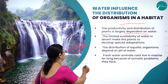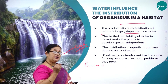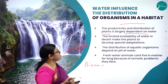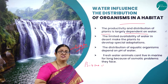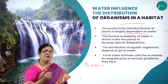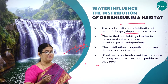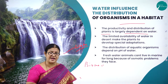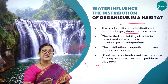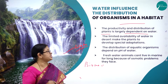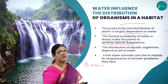A biome is a naturally occurring community with a lot of flora and fauna. In a desert biome there is limited availability of water, yet animals like the camel and the kangaroo rat are able to survive in that extreme heat and water scarcity. This is possible because they develop certain special adaptations. The limited availability of water in deserts makes plants and animals come out with special adaptations.